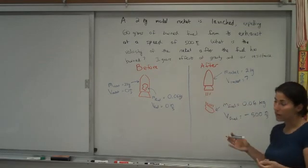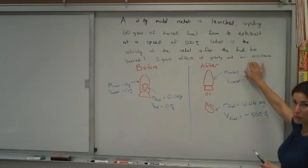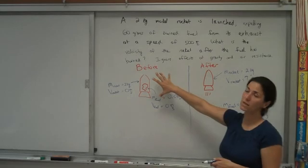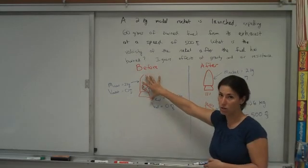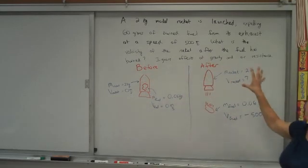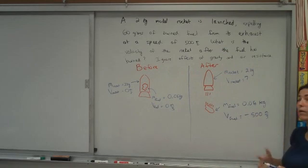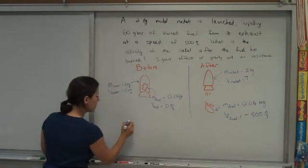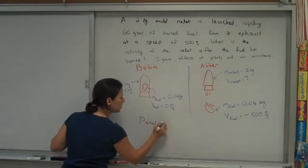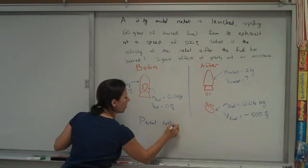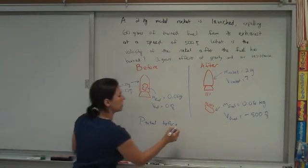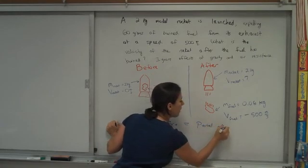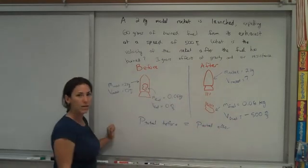Since we've accounted for everything, and there's no outside forces, then we can say that momentum is conserved. Whatever total momentum we start with in this picture, we're going to have the same total momentum in that picture. As long as we account for everything, there's no outside forces. So I can go ahead and write that. The momentum total beforehand, P total before, all the momentum you can possibly find in this picture, is equal to P total after, all the momentum you can possibly find in this picture.